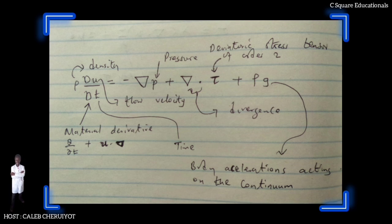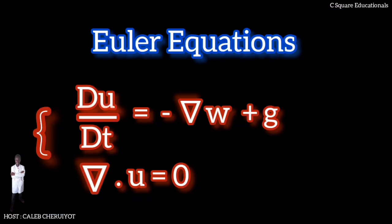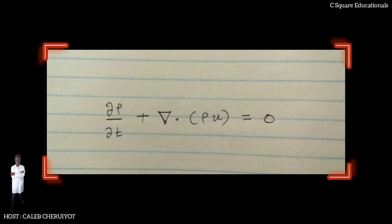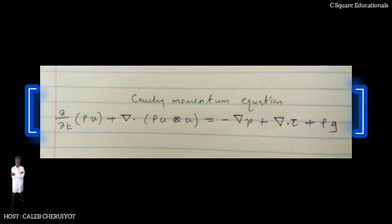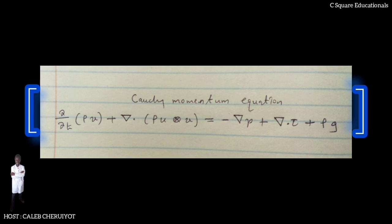In this form it is apparent that under the assumption of an inviscid fluid with no deviatoric stress, the Cauchy equations reduce to Euler equations. Assuming conservation of mass, we can use the mass continuity equation ∂ρ/∂t + ∇·(ρu) = 0 to arrive at the conservation form: ∂(ρu)/∂t + ∇·(ρu⊗u) = −∇p + ∇·τ + ρg, where ⊗ is the outer product. The left side of the equation represents acceleration composed of time-dependent and convective components.